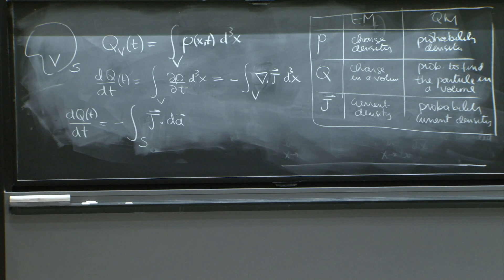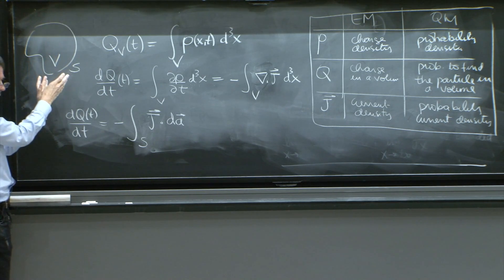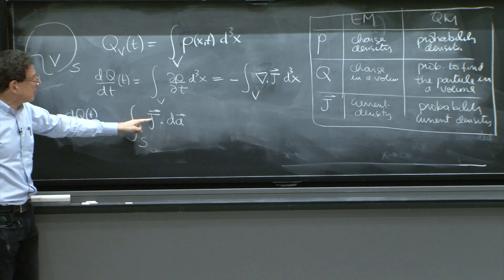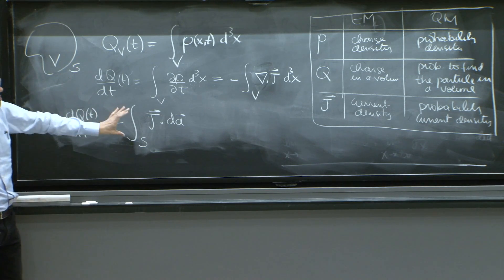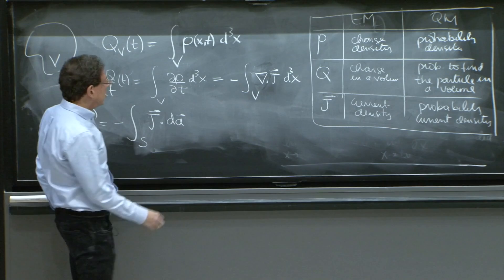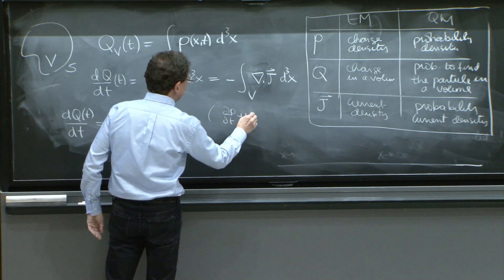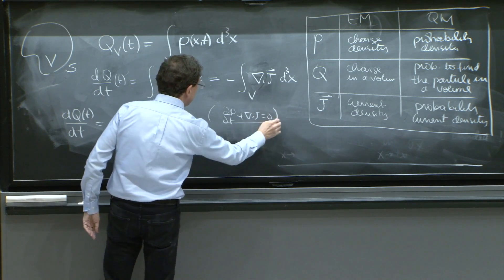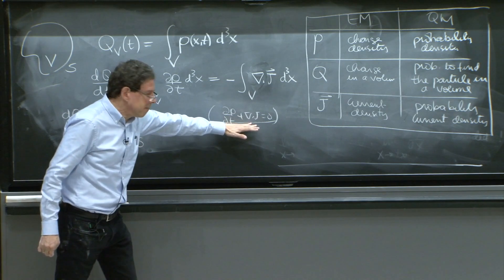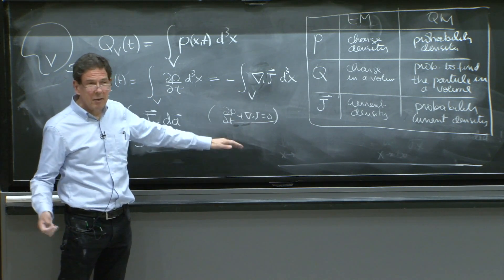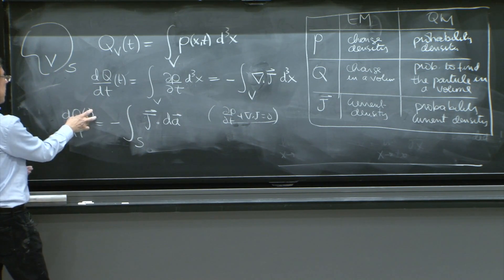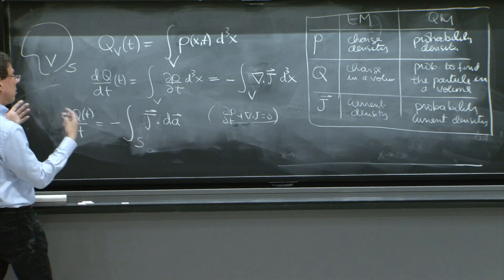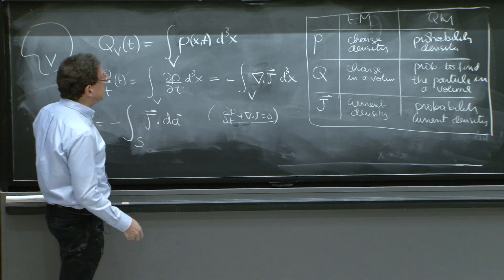You say, look, charge is never created or destroyed. So if you see the charge inside the volume changing, it's because there's some current escaping through the surface. So that's the physical interpretation of that differential equation, of that d rho dt plus divergence of j is equal to 0. This is current conservation, and many people look at this equation and say, what? Current conservation? I don't see anything. But when you look at this equation, you say, oh, yes. The charge changes only because it escapes the volume, not created nor destroyed.